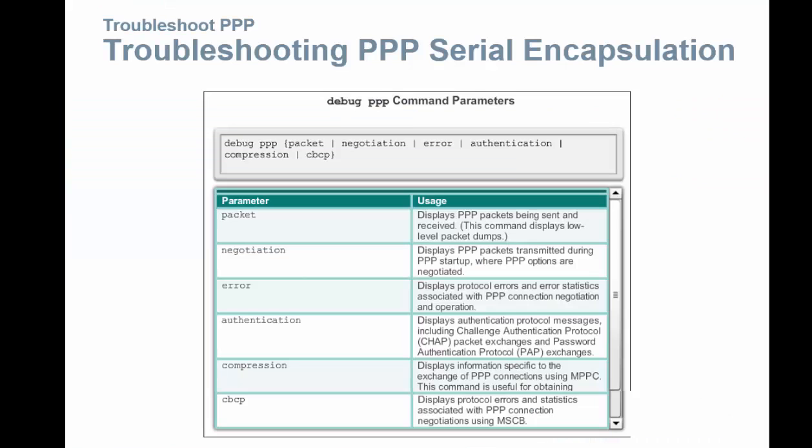When you use the debug PPP command to display information about the operation of PPP, here's some of the command syntax that you need to look at. Use the no form of this command to disable debugging output. When we use the debug PPP command, we're trying to search for the following.